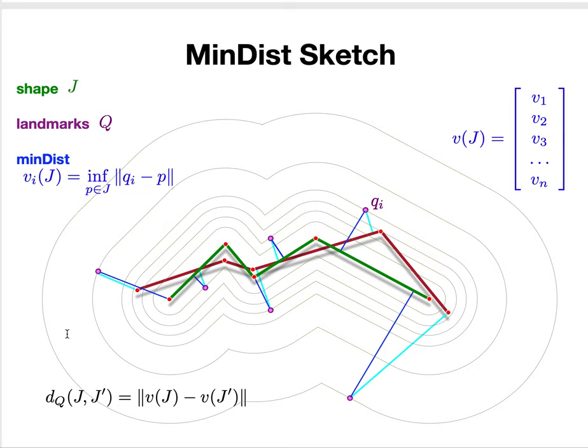In this talk, we showed how to think about taking a subset of the number of landmarks needed to define this distance and how it gives you an approximation of the MinDist function, which shows up in many places in geometry like shape reconstruction and computational topology.